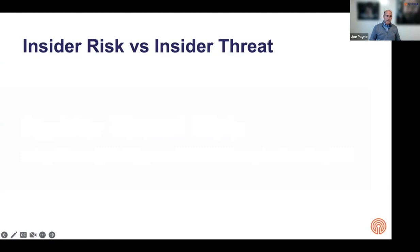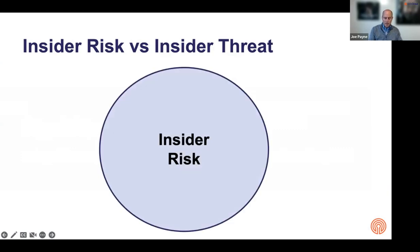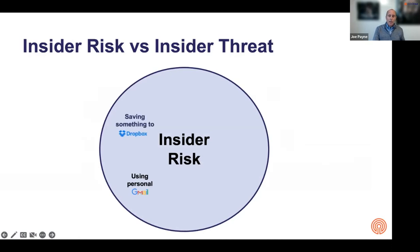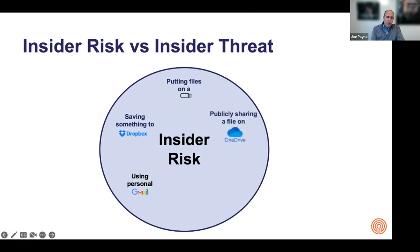Why don't we start with the difference between insider risk and insider threat? Just to be clear about how we talk about it in today's context: insider risk is a big, broad problem. It happens when people share information using their personal Gmail, save something to their Dropbox account, put some files on a thumb drive, or publicly share something on their OneDrive account. None of these things by themselves are necessarily a threat, and they're actually being done by our own employees, so we don't tend to think of them as a threat.